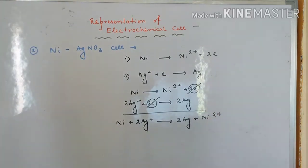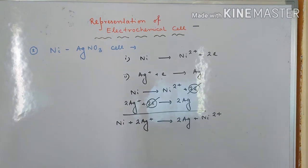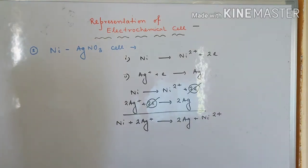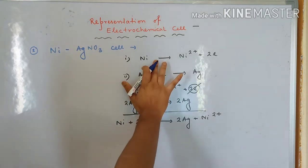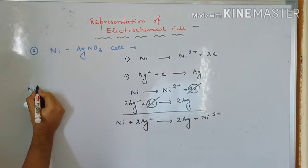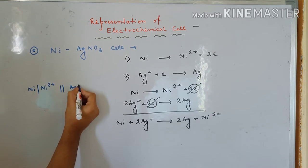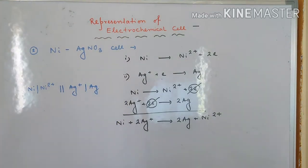It is very easy to do the mistake and get confused here, so we must be careful - confusion will produce just the opposite result. The nickel part is the oxidation, so we write: Ni followed by Ni²⁺, then salt bridge, then Ag⁺ followed by Ag. You may or may not write solid/aqueous notation, but this is how the cell should be represented.